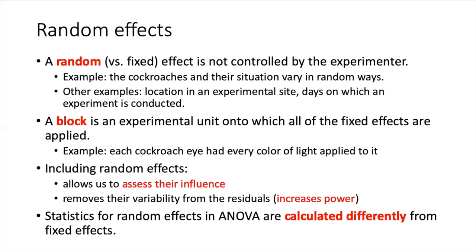The statistics that are derived for random effects are calculated in a different way from fixed effects. So when we go to set up the ANOVA, we cannot simply use the same function with the same arguments as we did on a two-factor ANOVA where both of the effects were fixed. And we'll see how that is set up when we look at the example.